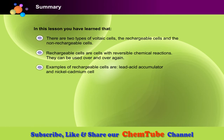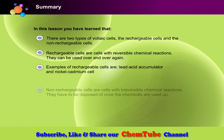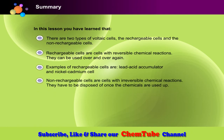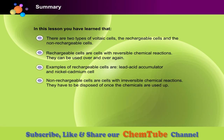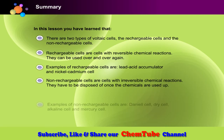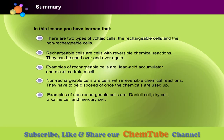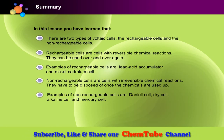Examples of rechargeable cells are the lead-acid accumulator and the nickel-cadmium cell. Non-rechargeable cells are cells with irreversible chemical reactions. They have to be disposed of once the chemicals are used up. Examples of non-rechargeable cells are the Daniel cell, dry cell, alkaline cell, and mercury cell.